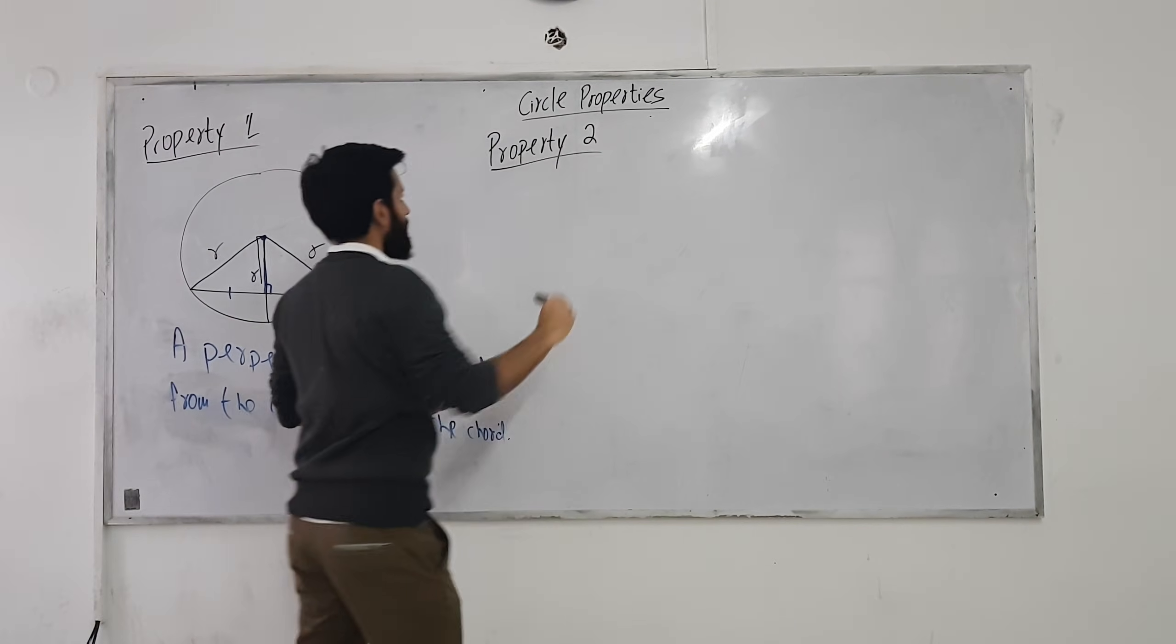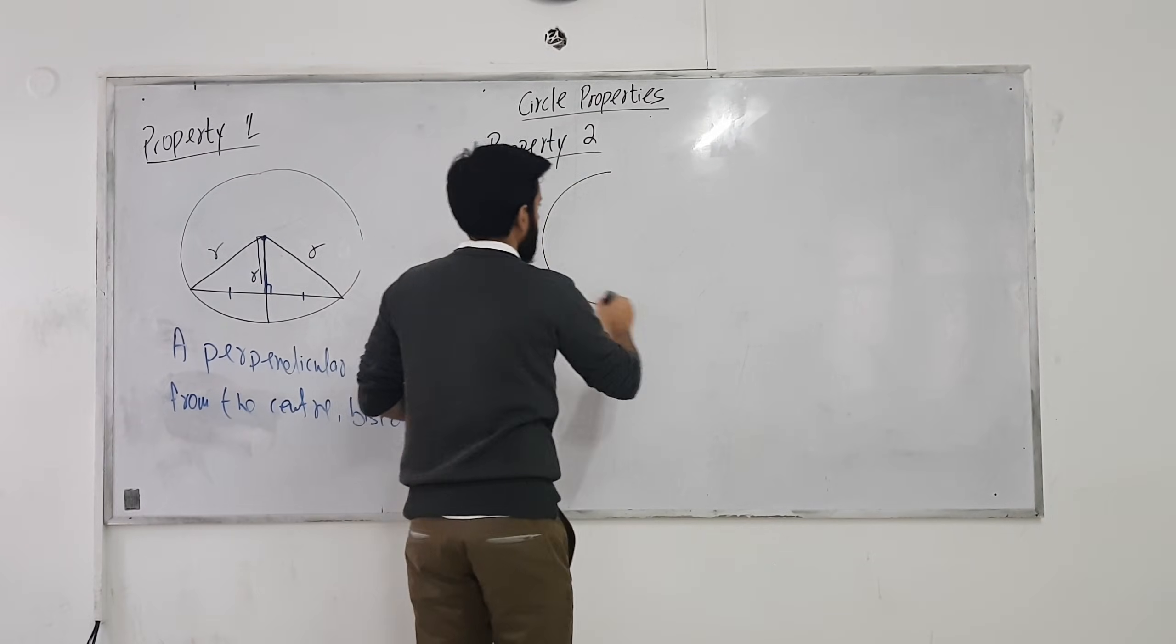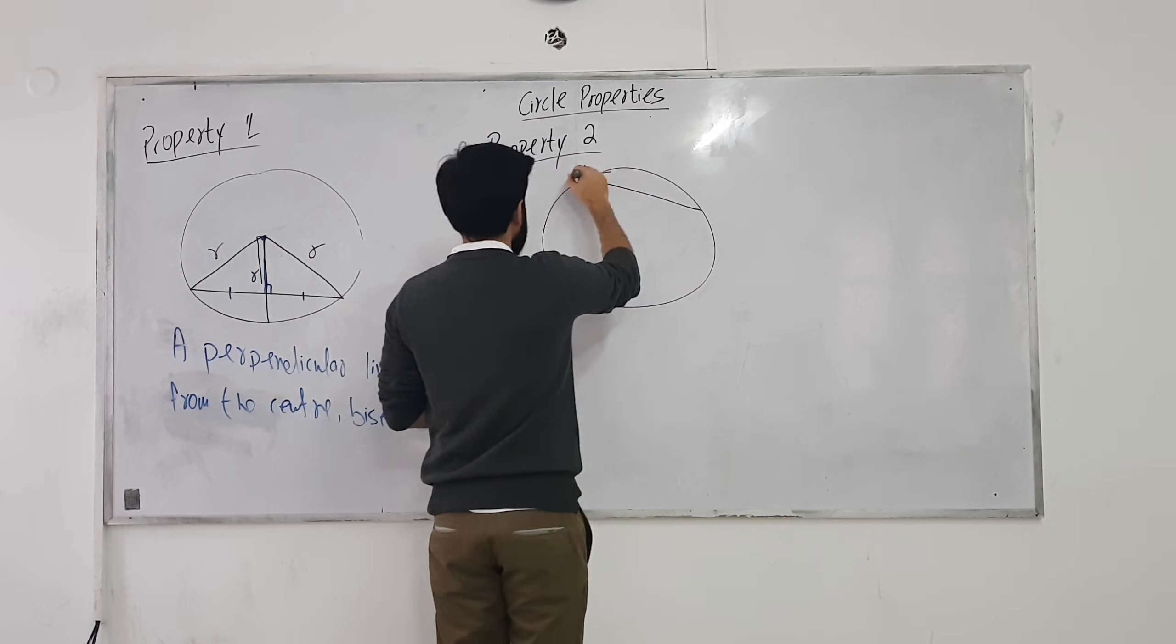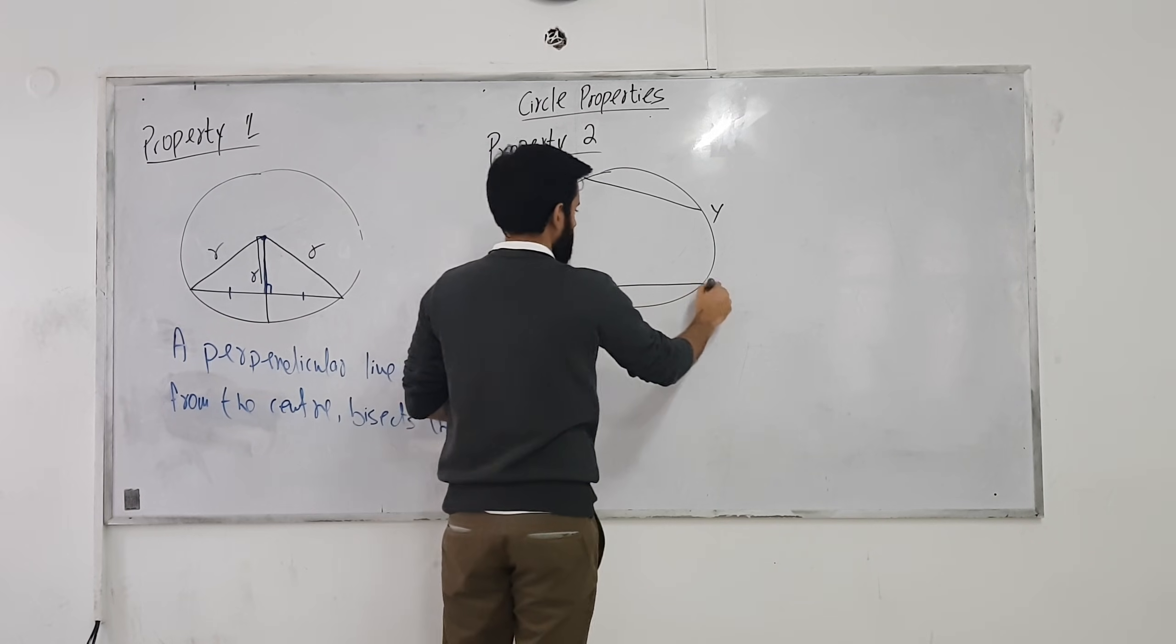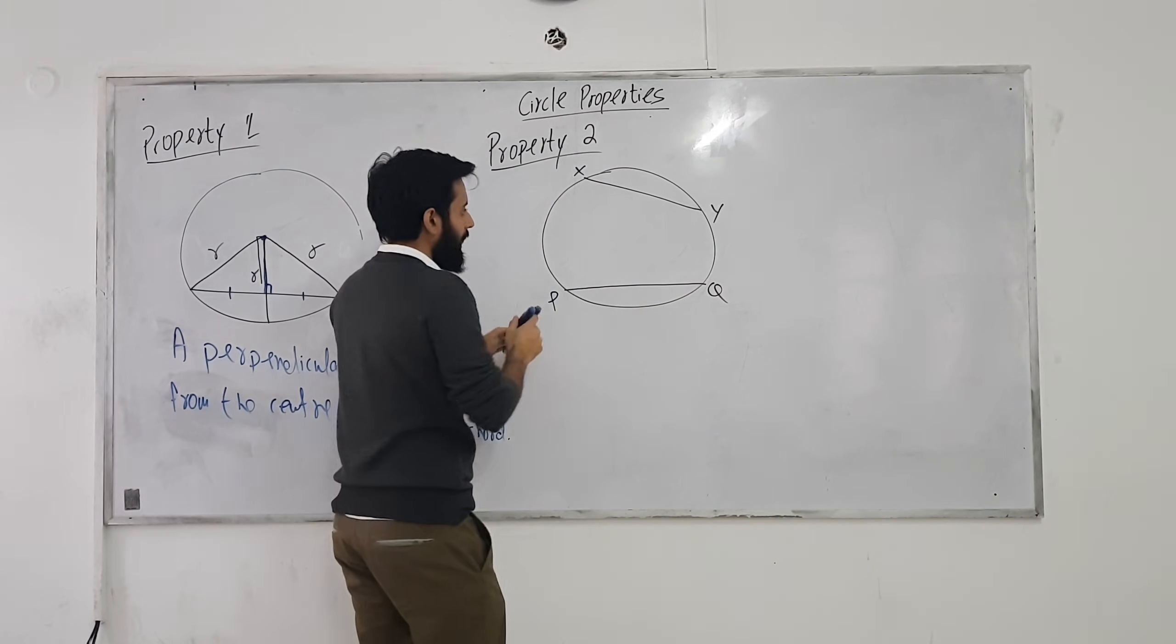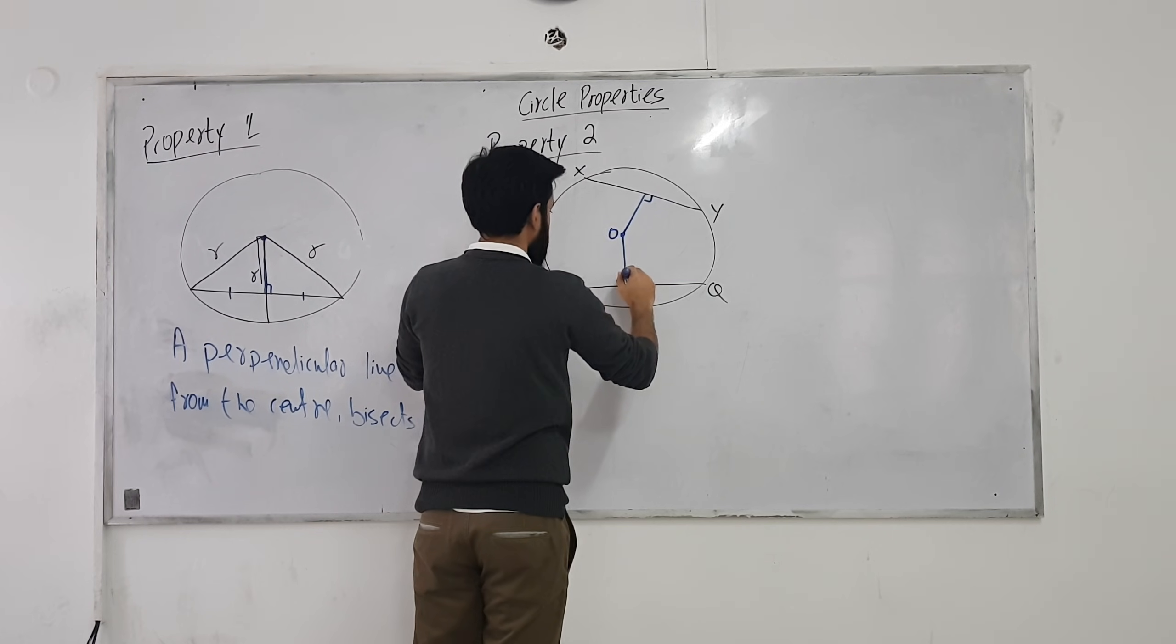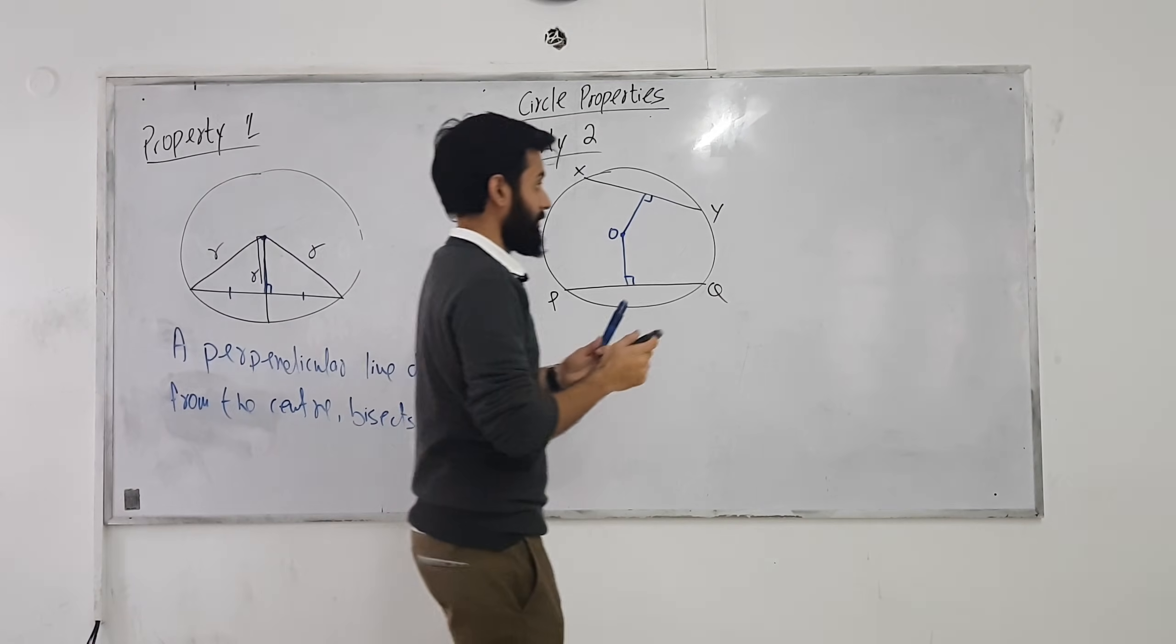Any questions? You guys understand the term equidistant? What does it mean? It's not half, that's bisect. Equidistant means equal distance. So here's again a very simple property. If you have two chords, XY and PQ, and if they are equidistant from the center, meaning their distance from the center is the same, do you know what else will be the same? Their length.